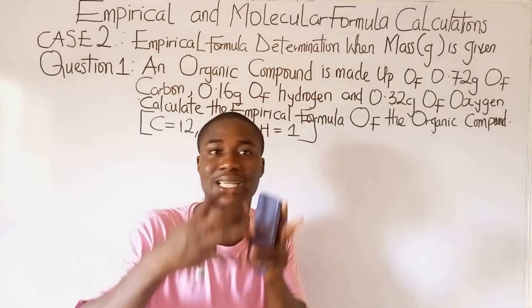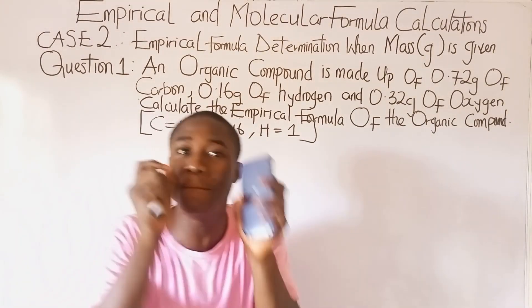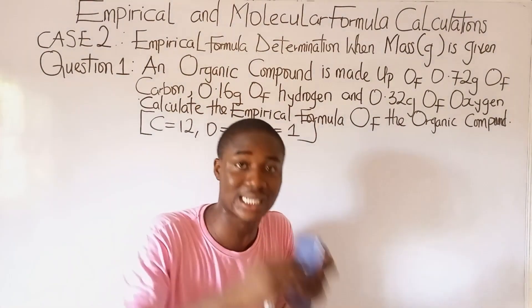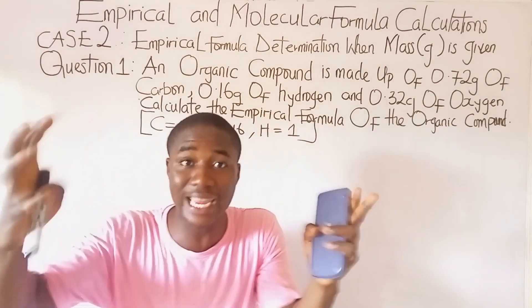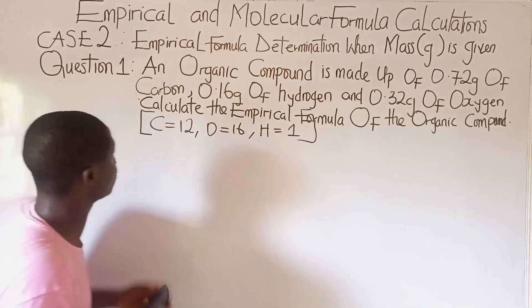In chemistry, the mass should most times be in grams, whereas in physics, mass is most times in kilograms. So let me read the question.